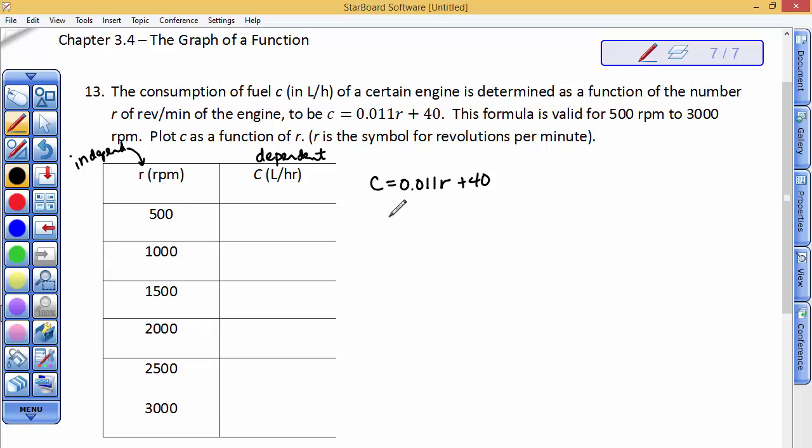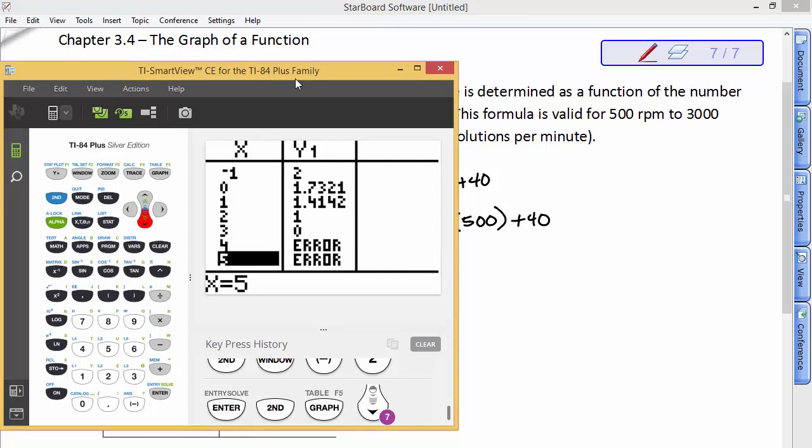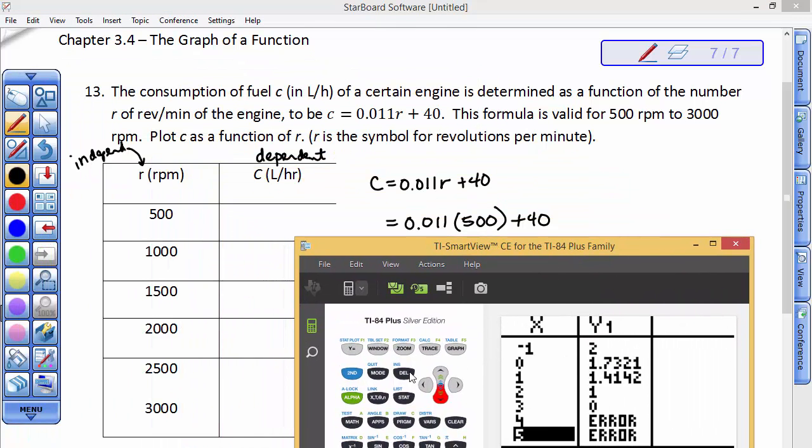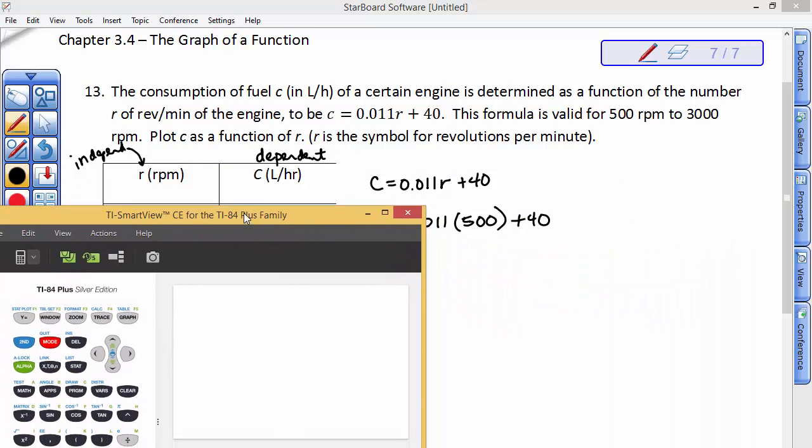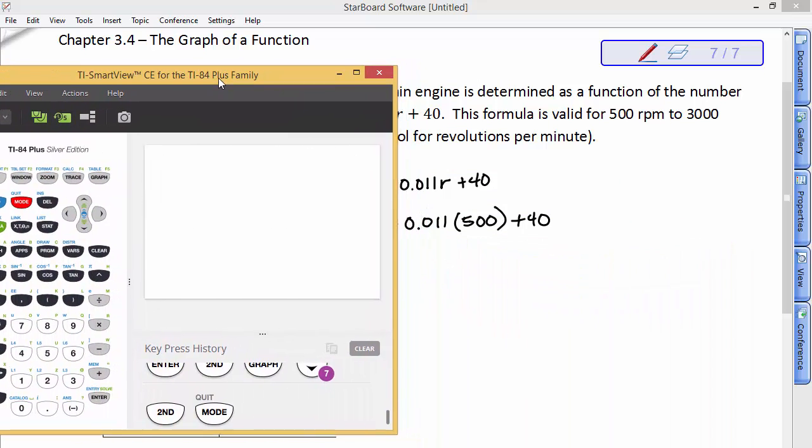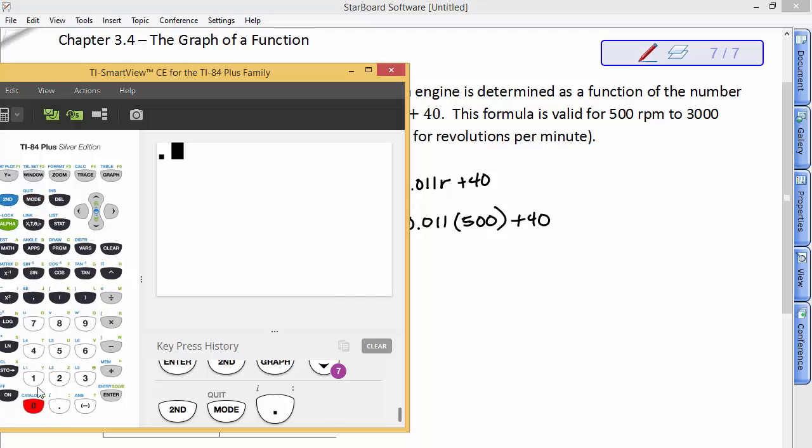While we could take our calculator, 0.011 times 500 and add 40 to it, I'm trying to do this where I can see it. 0.011 times 500 plus 40 and get an answer of 45.5.